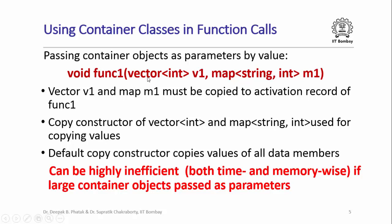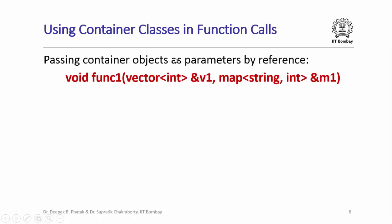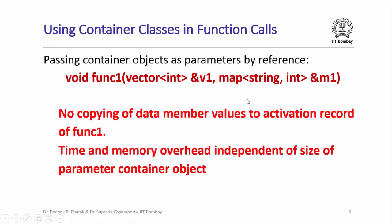What could be an alternative way of passing container objects as a parameter? We could pass them by reference. Here is an alternative form of func1 where I have passed the parameters v1 and m1 by reference. When we pass parameters by reference, basically pointers to those parameters are passed to the called function, so there is no copying of data member values to the activation record of func1. This is far more efficient in general. The time and memory overhead are actually independent of the size of the container objects being passed as parameters.